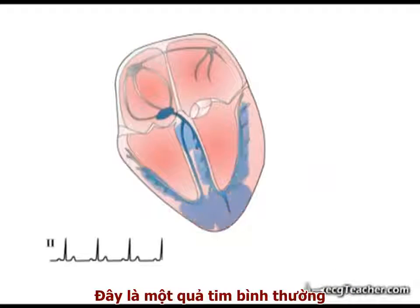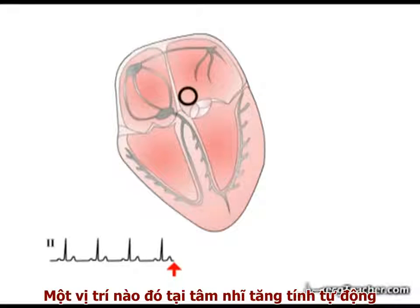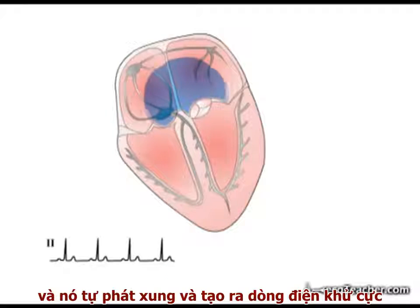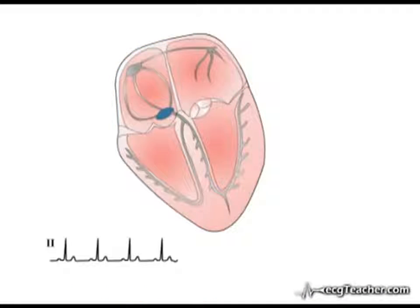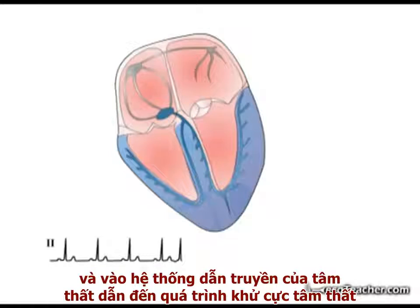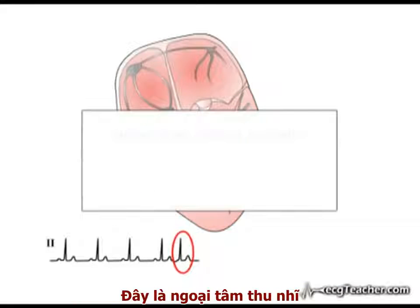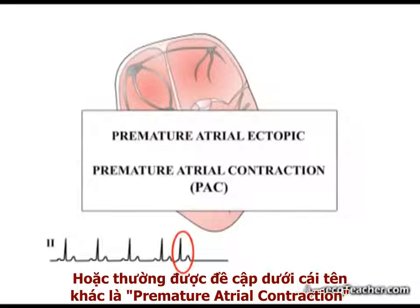This is a normal heart, and it is in sinus rhythm. At this point, a region of the atrium has developed enhanced automaticity and has discharged a depolarising current. Initially it triggers atrial depolarisation. The wave is transmitted by the AV node into the ventricular conducting system, triggering ventricular depolarisation. This is a premature atrial ectopic, or as it is frequently referred to, a premature atrial contraction.